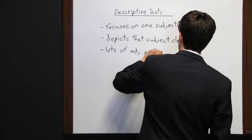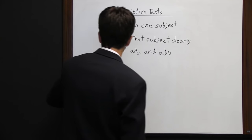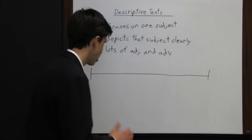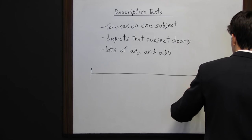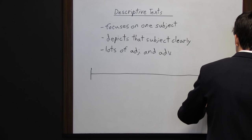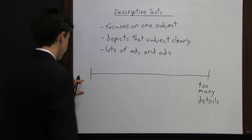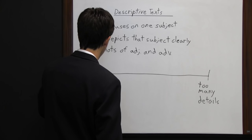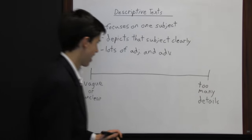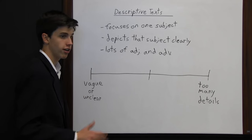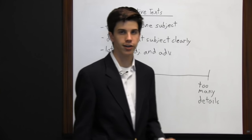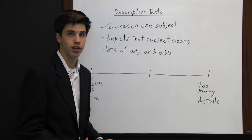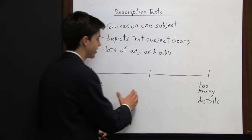A writer wants lots of details in a descriptive text, but there can be too many. On the other end of the spectrum, if there aren't enough details, the paper can be vague or unclear. What the writer is trying to accomplish is a happy medium — where the paper is clear and precise, but not so detailed that the reader gets bogged down in extra information. As a writer, aim for balance in a descriptive text.